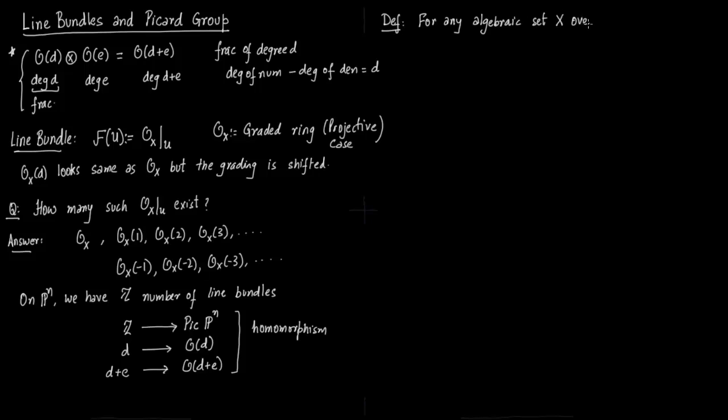Now we define the Picard group. For any algebraic set X over K, the Pic group is the set of isomorphism classes of line bundles over X. We have already seen that the Pic of PN is integers.